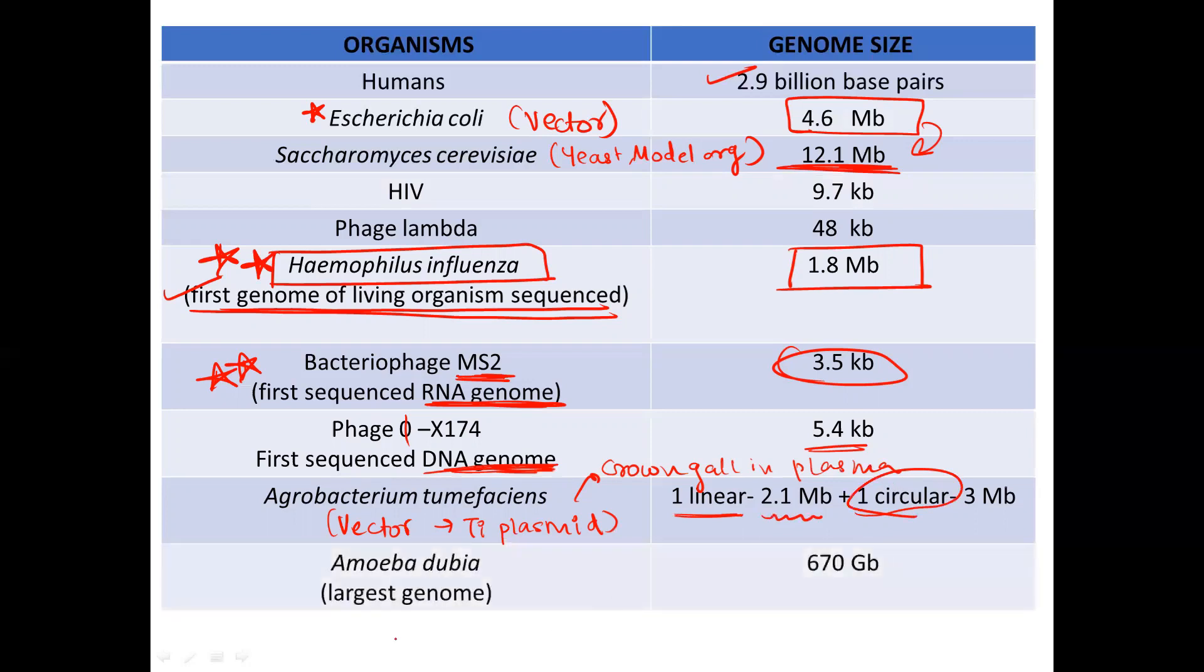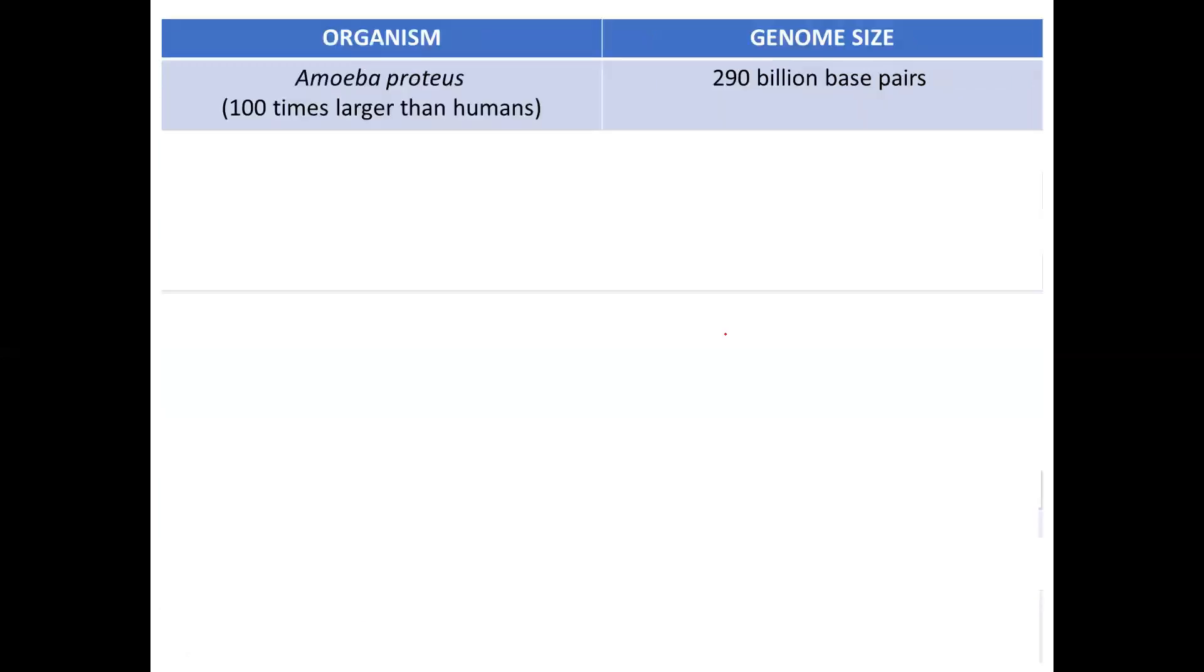Next up we have the largest genome. As in the previous year's paper, the largest genome is of Amoeba dubia which is 750 GB. Here we were all talking about KBs and MBs. Here we have Amoeba dubia, the largest organism genome, the largest bacterial genome that is 670 GB. Next you have Amoeba proteus. Amoeba proteus is 100 times larger than humans. So it has basically 290 billion base pairs.